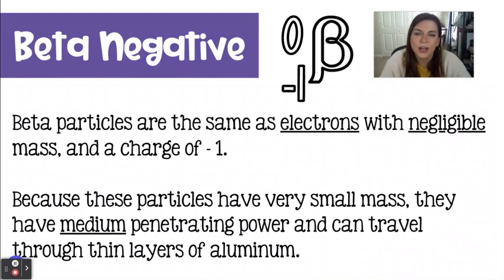Up next, we have beta negative, which I have always just referred to as beta. Because beta particles are effectively electrons. It's a little weird how an electron comes out of a nucleus. It's not exactly like a core or a valence electron. There's kind of a manipulation inside of the nucleus that would be the equivalent of an electron leaving. And that's really all you need to know for now. These things have negligible mass, so virtually not measurable, and they have a charge of minus one. So these particles have a super tiny mass, so their penetrating power is going to be somewhere in the middle. It's better than an alpha particle, but because there is still some amount of mass, it can't just go on forever. It will be blocked by something. And in this case, we're talking some pretty thin layers of aluminum.